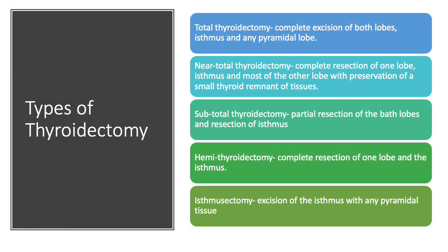Types of thyroidectomy according to extent of resection: total thyroidectomy is complete excision of the thyroid including both lobes, isthmus, and pyramidal lobe. Near-total thyroidectomy preserves a small amount of thyroid tissue on one side. Subtotal thyroidectomy preserves small amounts on both sides. Hemithyroidectomy is complete resection of one lobe and isthmus, preserving only the other lobe. Isthmusectomy is excision of the isthmus with any pyramidal tissue. Currently, the most commonly performed procedures are total thyroidectomy or hemithyroidectomy.